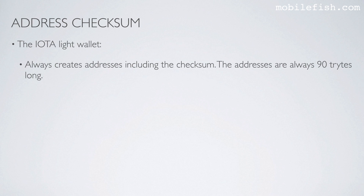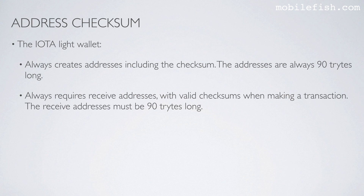The IOTA Lite wallet always creates addresses including the checksum, so addresses are always 90 trites long. The IOTA Lite wallet always requires receive addresses with valid checksums when making a transaction — receive addresses must be 90 trites long.